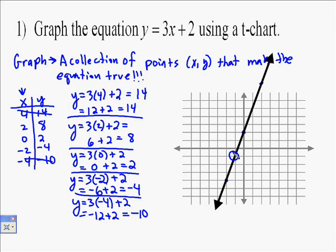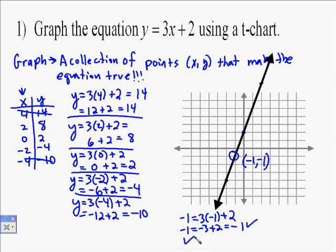So every point that makes y equals 3x plus 2 true would actually fall on this line. So you can find another point. See, I just discovered another point. Negative 1 over negative 1 down. Well, that point should make it true, so let's test it out just real quick. So y is negative 1, x is negative 1. So negative 1 equals negative 3 plus 2, so negative 1 equals negative 1, which is true. So that shows that our line is correct. So that is the graph of a line.